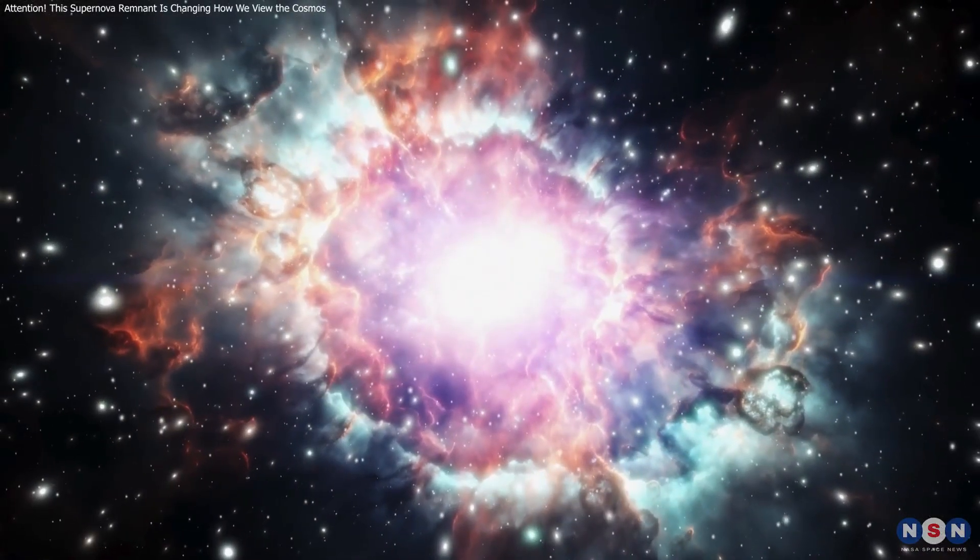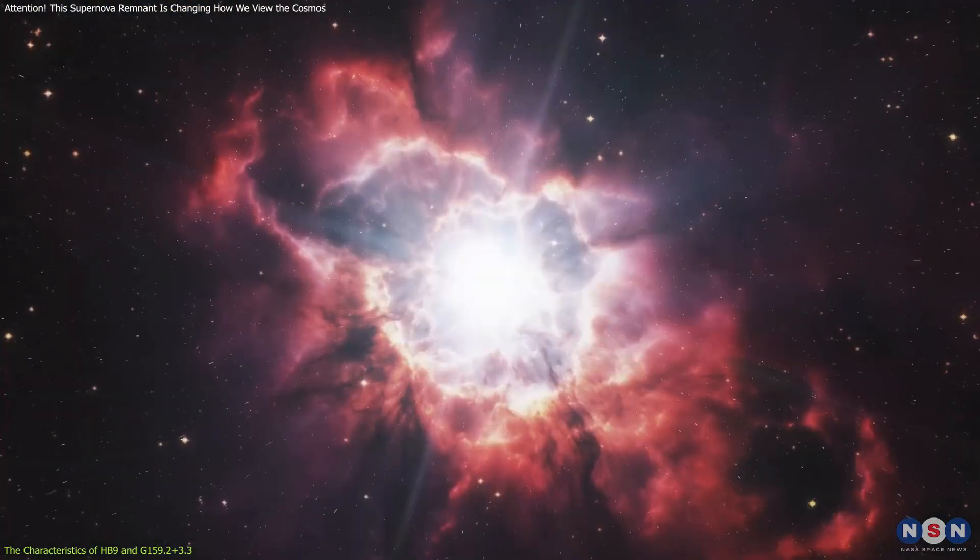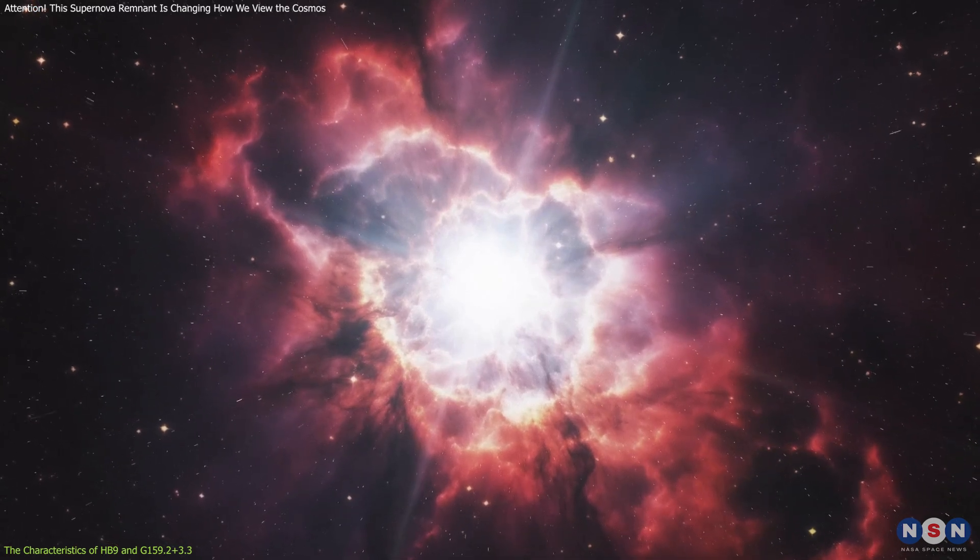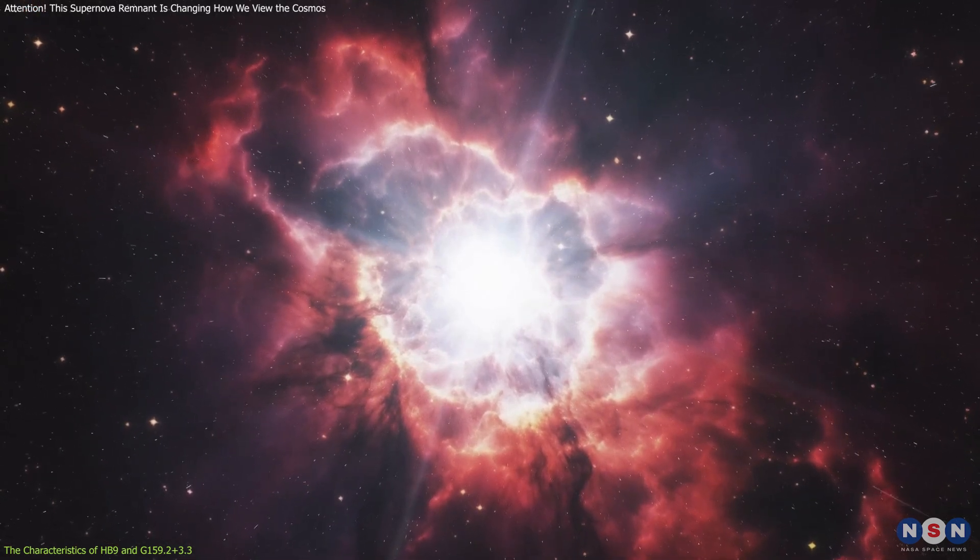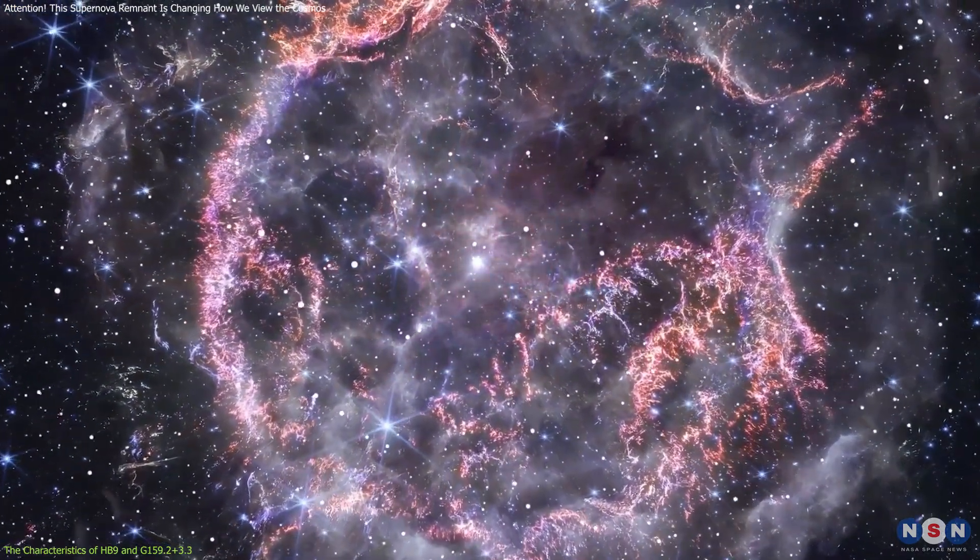Hb9, a supernova remnant located about 2,000 light years away from Earth, is relatively young in cosmic terms, only around 6,600 years old. Despite its youth, this remnant has already made an impact on the surrounding galactic environment.